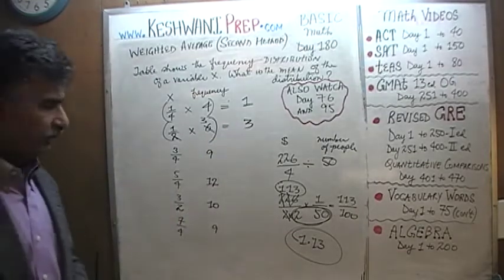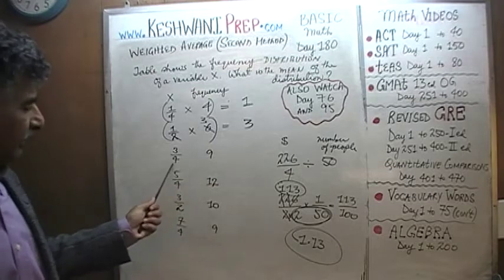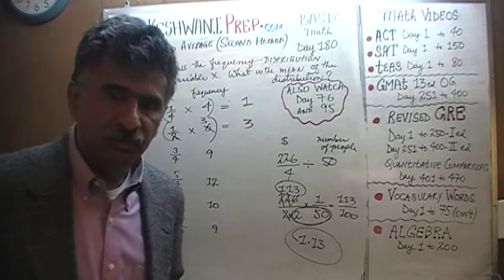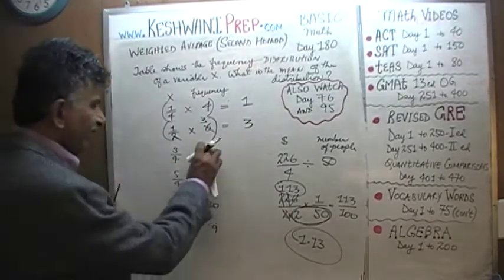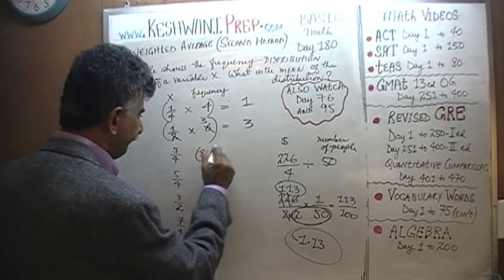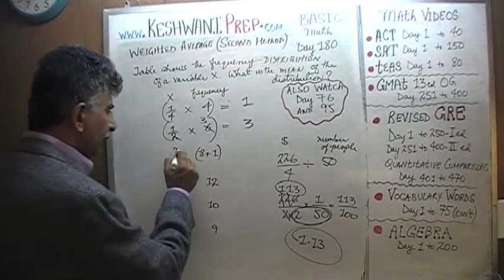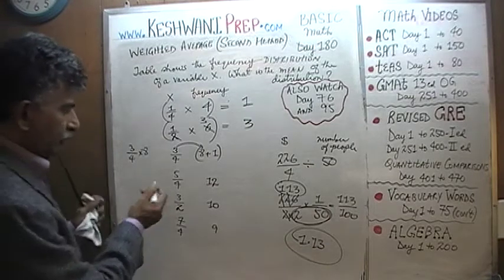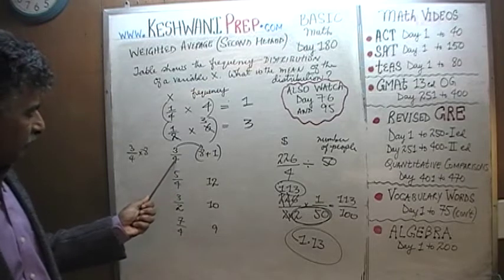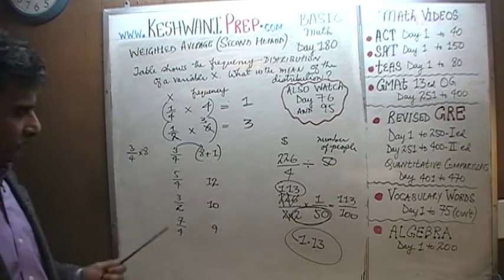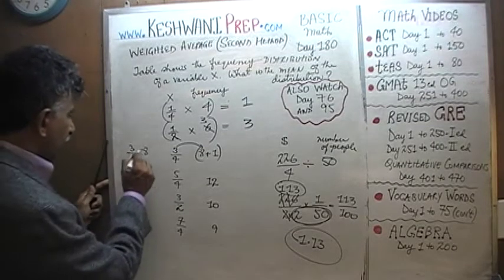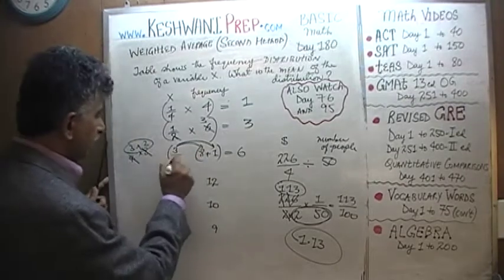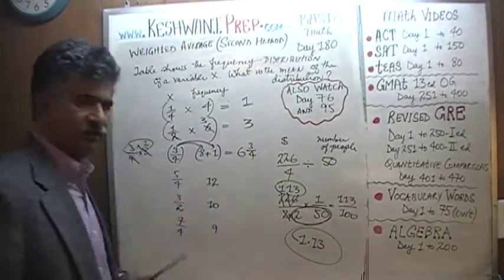Now this is where things get tricky. When they give you an odd number like nine with a quarter, you have to be a little bit creative. Don't look at nine as a nine — look at nine as eight plus one. So three quarters times eight: cross out the four, eight becomes two, and two times three is six. Then three quarters times one is three quarters. So we end up with six and three quarters.